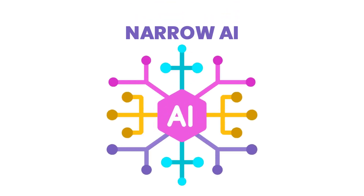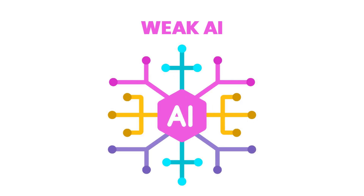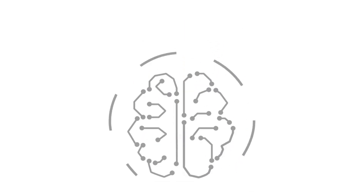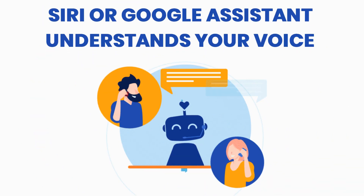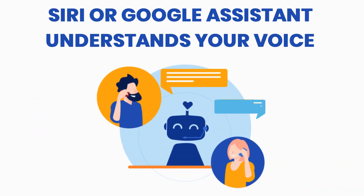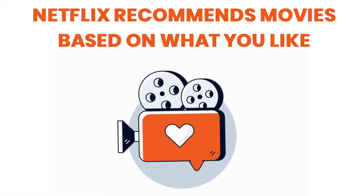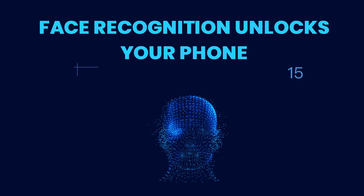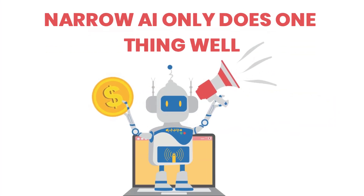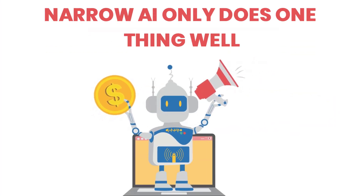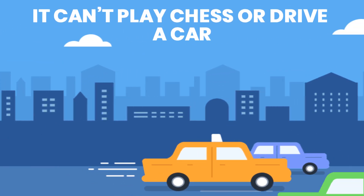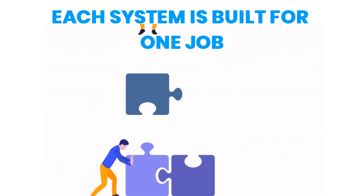Let's start with narrow AI, also called weak AI. This is the type of AI we use every day, and it's really good at specific tasks. For example, Siri or Google Assistant understands your voice, Netflix recommends movies based on what you like, and face recognition unlocks your phone. But here's the thing — narrow AI only does one thing well. Siri can answer questions, but it can't play chess or drive a car. Each system is built for one job.